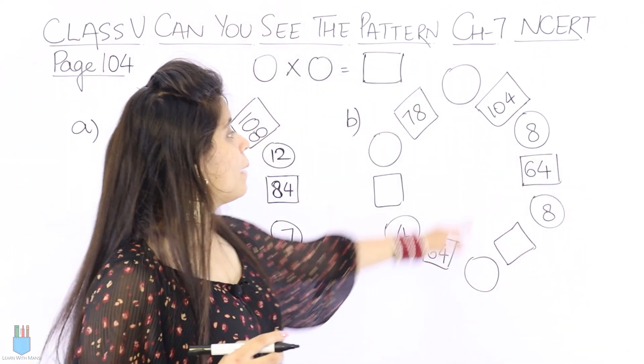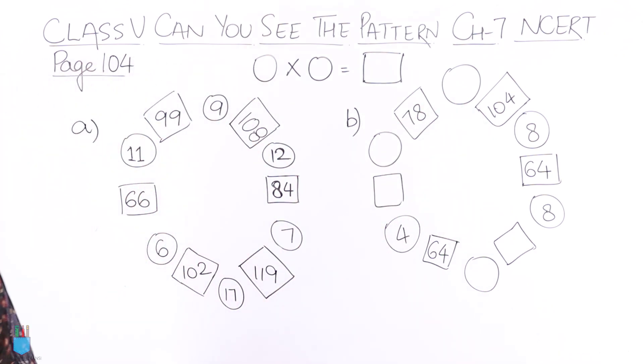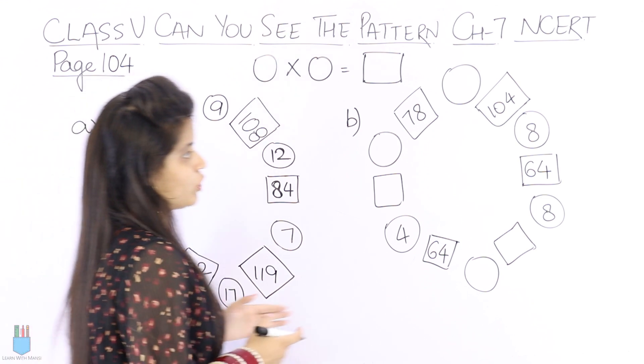Here is 104. So this is which table is like this? When we multiply 8, if we multiply, so it is 104.